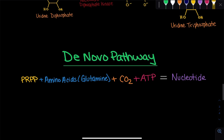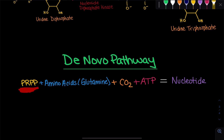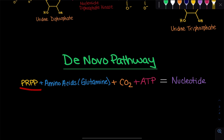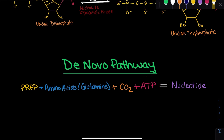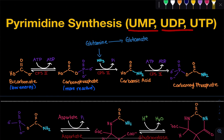Let's overview what happened in the de novo pathway. There are two pathways to synthesize pyrimidines: de novo and salvage. In the de novo pathway, we use PRPP — our activated sugar molecule from the pentose phosphate pathway with two phosphates added from ATP. We use amino acids, specifically glutamine and aspartate. We use carbon dioxide as bicarbonate, and we use ATP. In the end, we end up with a nucleotide. That is the de novo pathway for synthesizing pyrimidines, specifically UMP, UDP, and UTP.